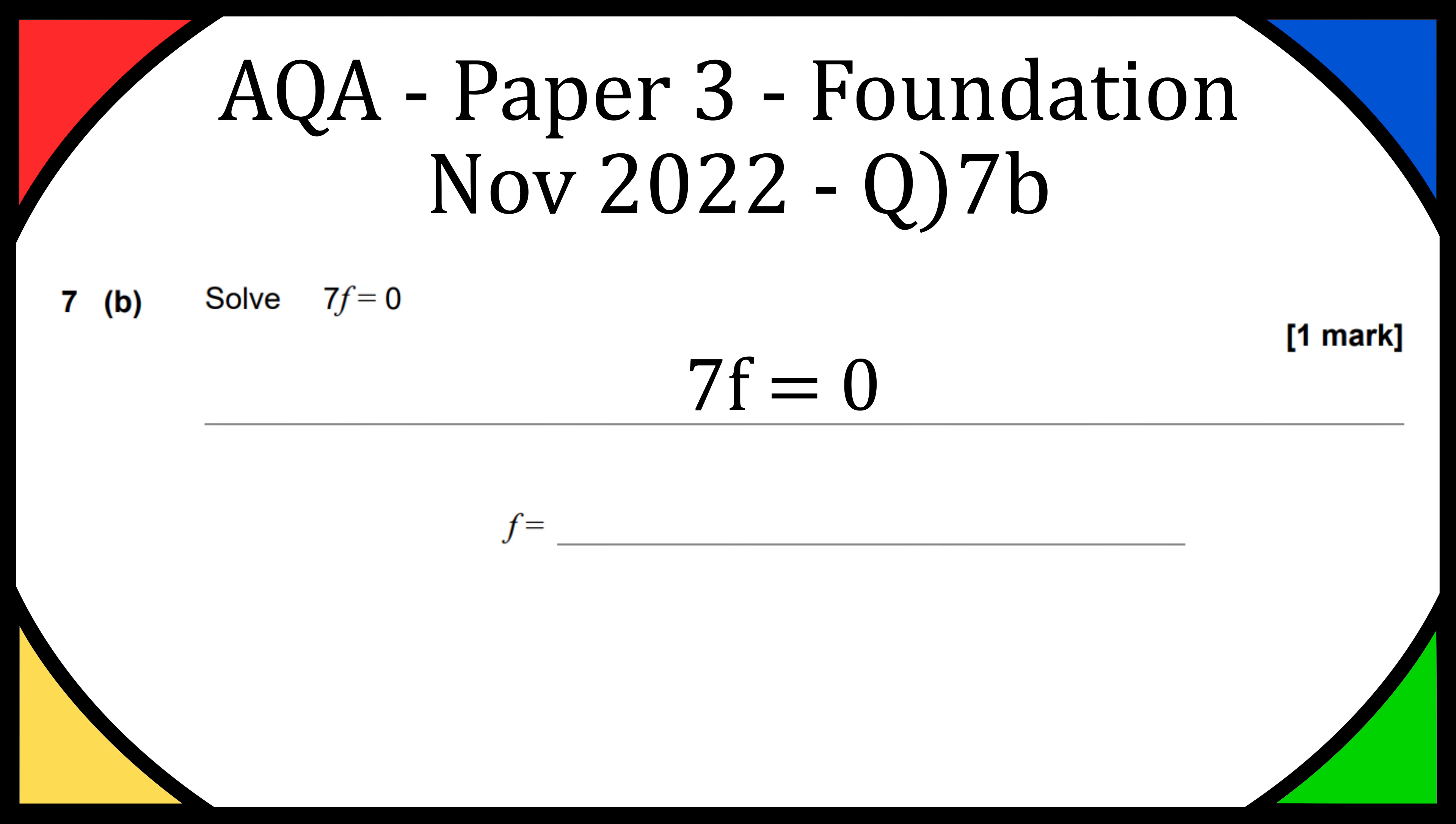So we have 7f is equal to 0. If we want to get f by itself what we can do is divide both sides by 7 because that means the 7 on the left will cancel out and you'll see what happens on the right hand side when we divide by 7.